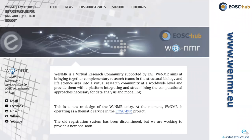To give you an idea of the community's impact: this is a world map of where our users are. We had over 17,000 total users registered to some of the WeNMR services — these are statistics only from portals operated in Utrecht. HADDOCK is by far the most used service with more than 16,500 users from more than 110 countries worldwide. The largest community comes from India, then Europe aggregated about the same size, then the US. This is constantly updated and accessible online.